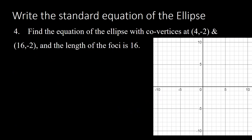Now for the fourth example: find the equation of the ellipse with co-vertices at (4, -2) and (16, -2), and the length of the foci equal to 16. We'll adjust the Cartesian plane intervals to increments of two and ten to accommodate these values.